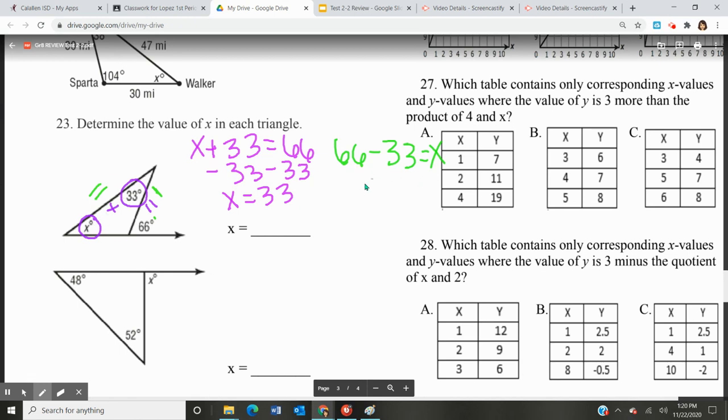So 66 minus 33, that equals 33, and that equals our other missing interior angle. So here x equals 33.